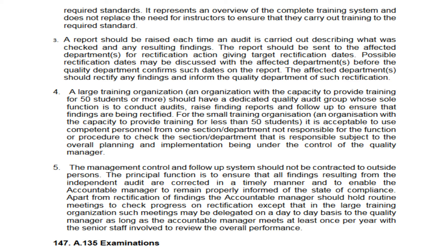In a small training organization, a competent person from any section can be appointed to conduct audits, provided that person is not involved in the area being checked. The accountable manager will be informed of all follow-ups, all independent audit rectifications, and everything else so they know whether all activities are happening in compliance. The accountable manager will hold routine meetings to check rectification progress. In a large training organization, these day-to-day meetings will be with the quality manager, and the accountable manager will review overall performance at least once per year.